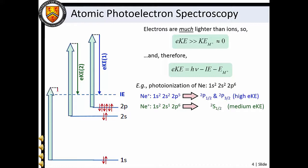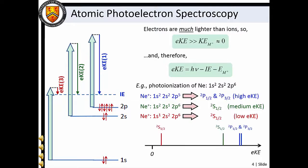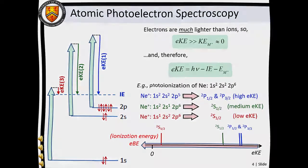Removal of a 1s electron is a very high energy process. As a result, corresponding photoelectrons have a comparatively low electron kinetic energy. Using our knowledge of atomic term symbols, we can assign the peaks in the observed electron kinetic energy distribution to electronic states of the ion. The highest electron kinetic energy corresponds to the lowest electron binding energy, and the lowest EKE corresponds with the highest electron binding energy.